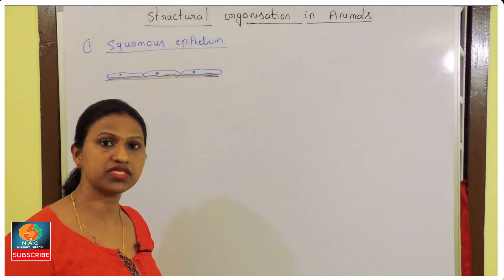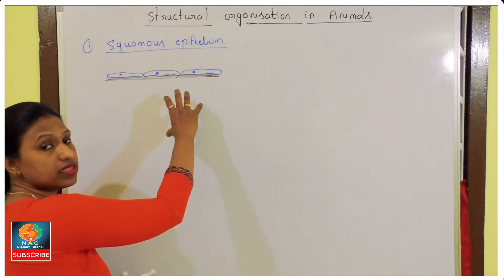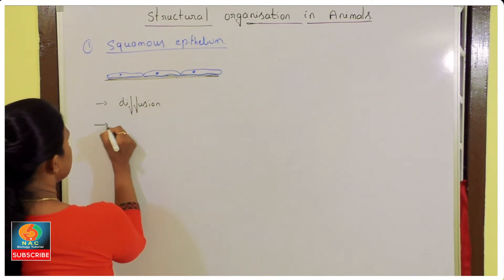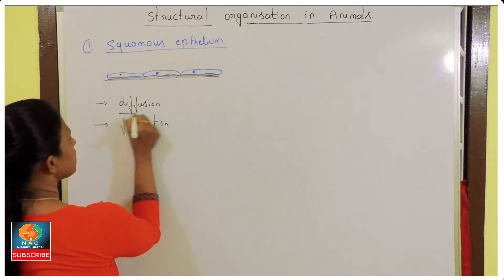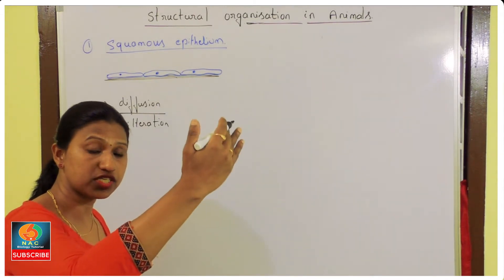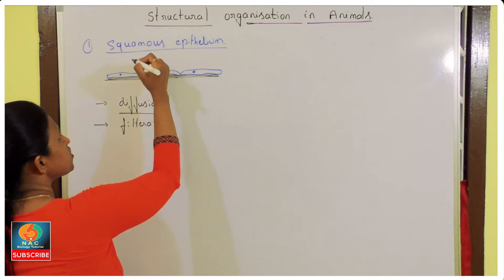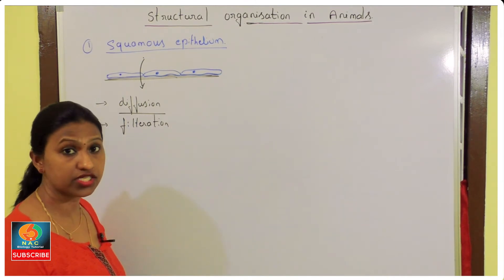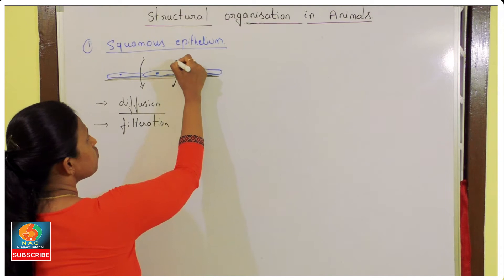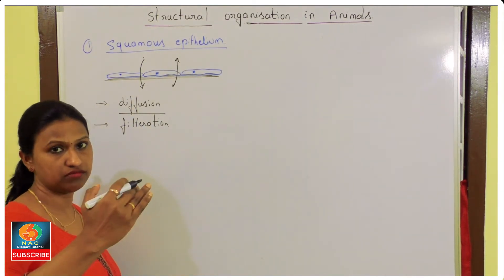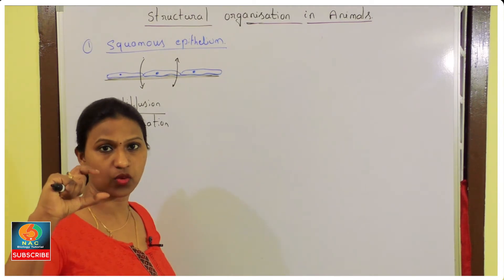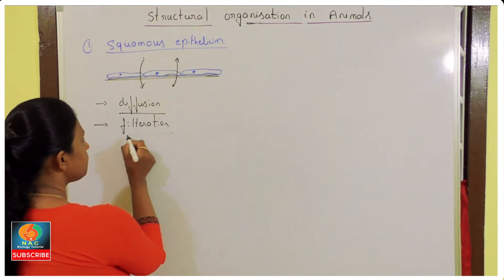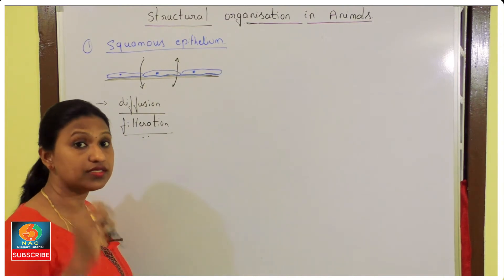Why are squamous cells so flat? They perform the function of diffusion and filtration. Diffusion means movement of molecules from a region of higher concentration to lower concentration. For the process of diffusion — to cross the barrier — it should be a thin layer, not a thick one. That is why this layer is flat and thin.